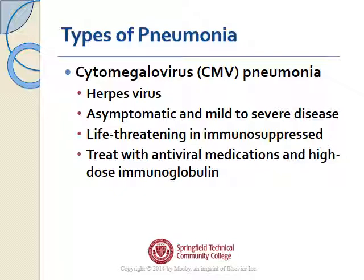People can also get cytomegalovirus pneumonia, which is caused by the herpes virus. It can be asymptomatic and cause anywhere from mild to severe disease, and it's life-threatening in immunosuppressed people. It's treated with antiviral medications and high-dose immunoglobulin.